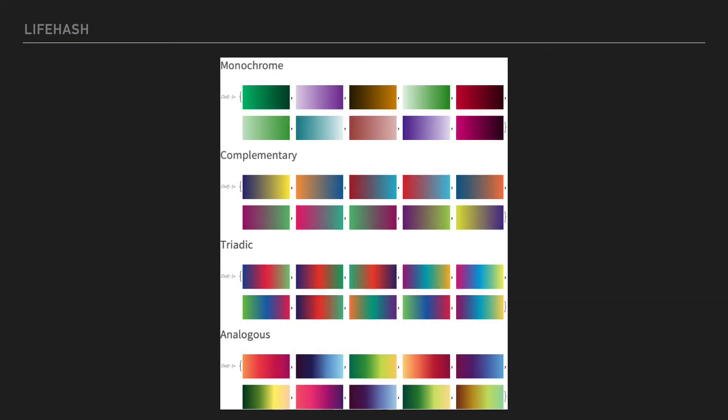Now we use some of the bits of the original digest to pick between two symmetries and four classic color schemes used by artists, and to pick the specific colors within those color schemes. The actual color palettes shown here are just a few possibilities among billions.